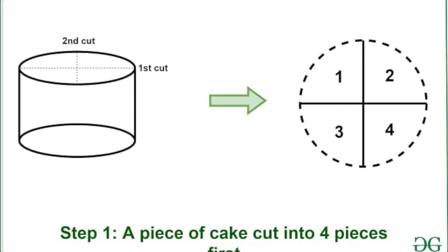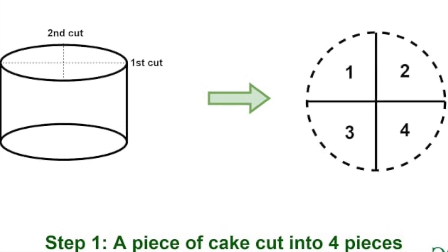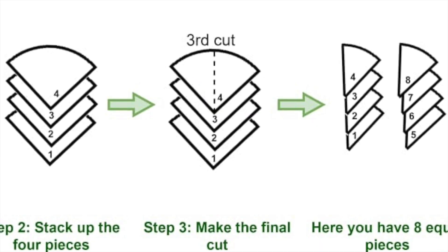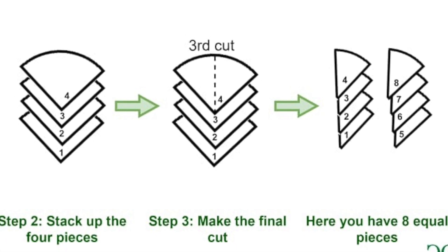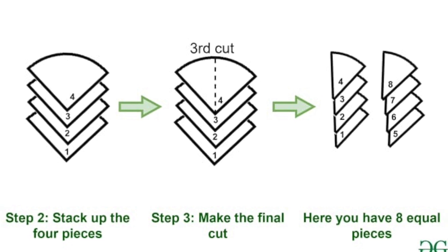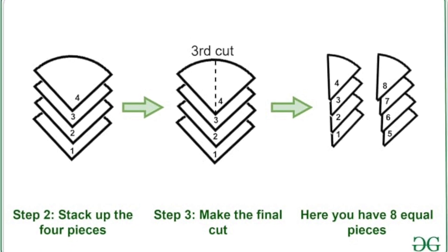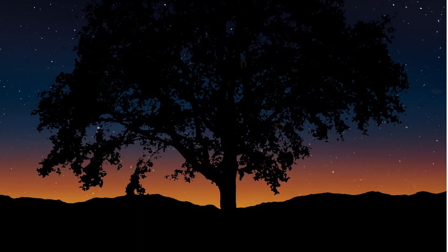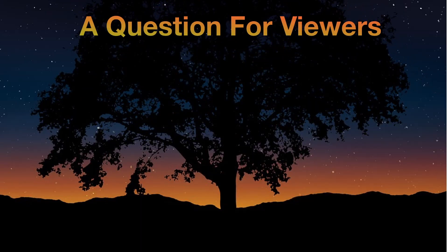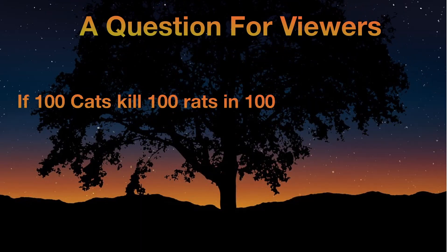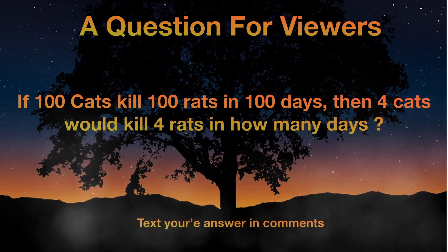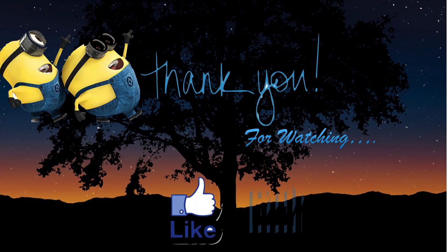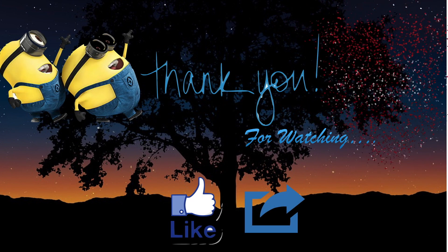First cut I will do horizontally and the second cut I will do vertically. Next I will stack up all the 4 pieces, and the final cut I will make in between the pieces. Finally I have 8 pieces which contain cream for every piece.